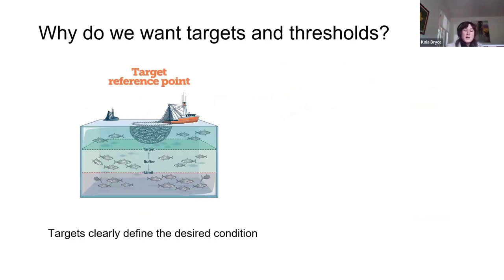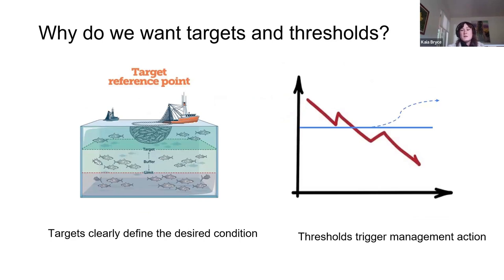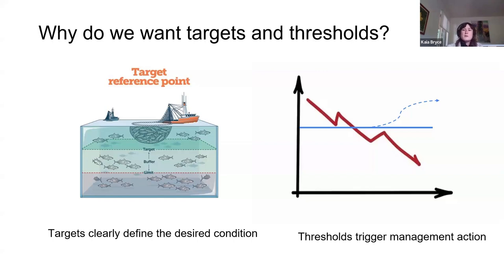Targets and thresholds are good characteristics of a management system because without these limits, we can end up observing undesirable changes to systems but lack the mechanisms to intervene. Targets and thresholds are essential to fulfilling the adaptive management cycle. They help distill broad goals and objectives to comparable numbers to facilitate structured decision-making and accountability. In our review of MPA management and monitoring plans, we found some examples of clear targets and operational thresholds, and in addition to ecological ones, we saw some development around social ecological targets and thresholds. We highlighted one example of an MPA in Belize making progress in this area.